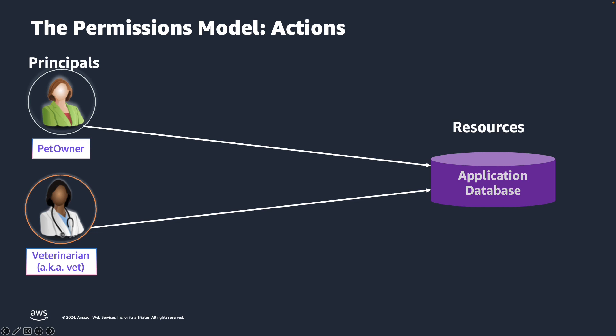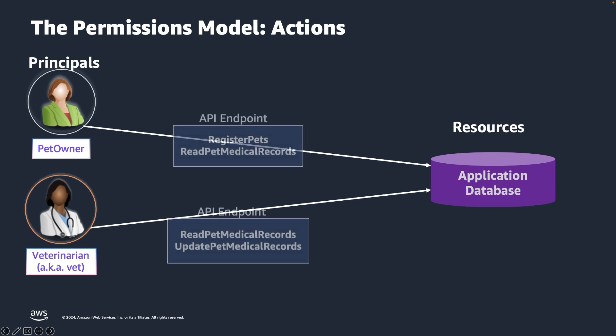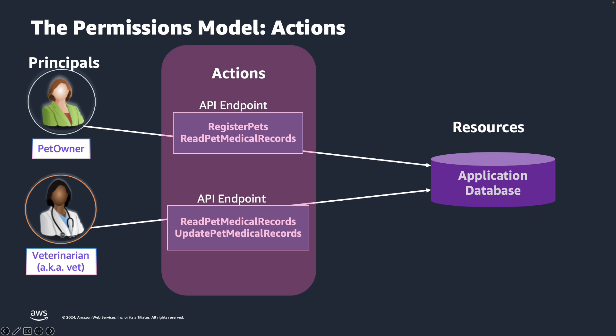Actions define what a principal is allowed to do on the resources. We talked about access to specific roles or fields in a database, but practically this access is enabled via APIs that provide access to the data. We can define the different actions that are available on the data. When a user logs into the vet app, if they belong to the pet owner group, they can either register a pet or read their pet medical records. If they belong to the vet group, they can read or update pet medical records.